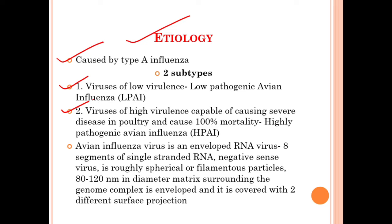The causative agent of avian influenza infection is type A influenza virus, which has two subtypes. If the low virulence subtype infects any poultry bird or wild bird, there will not be much clinical manifestation, so we call it low pathogenic avian influenza — LPAI. If the high virulence subtype infects any poultry bird or wild bird, severe disease will develop with 100% mortality rate, so we call it highly pathogenic avian influenza — HPAI.